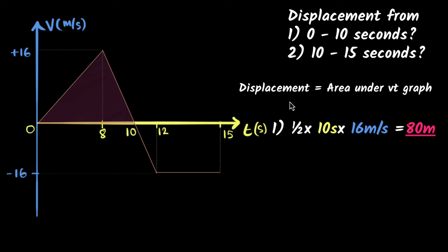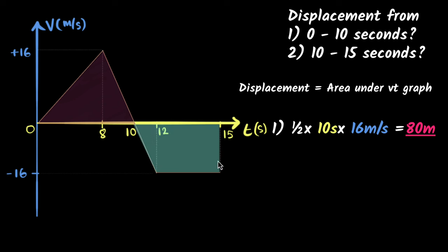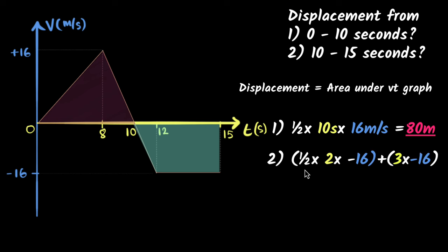So the units confirm that the area gives you displacement. Why don't you pause the video and try the second one yourself — what is the displacement from ten to fifteen seconds? So the displacement for the second part would be the area under this section of the graph. You can think of it as a trapezium, or simply as a triangle plus a rectangle. You need to be careful about signs — displacement can be negative as well.